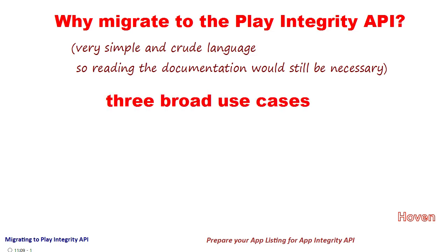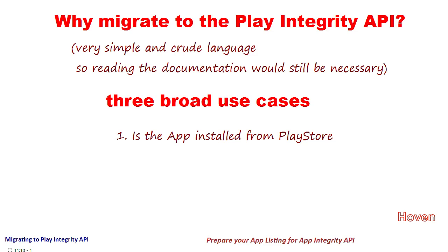I found three broad use cases where the Play Integrity API could be helpful. First, it helps you determine whether the app has been installed from your Google Play Store listing or not. This helps you ensure that your users are not running tampered versions of your app. Secondly, whether the app is licensed — meaning it was purchased by the user from the Play Store if you are selling the app.